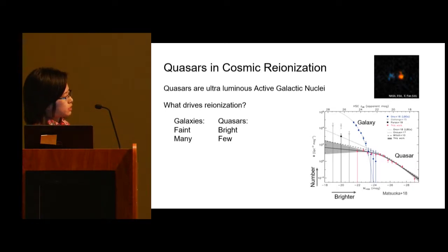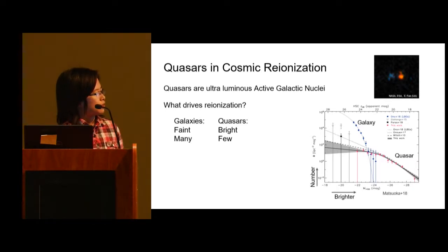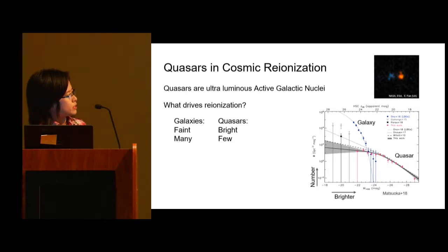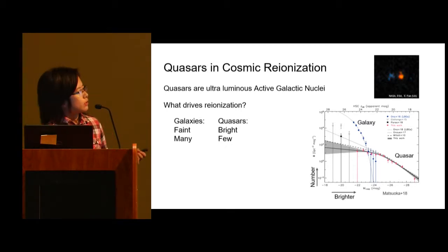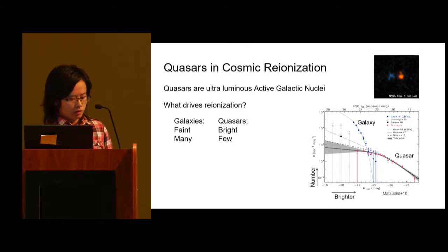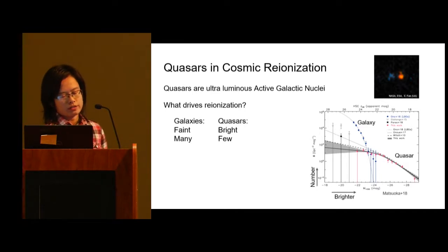The problem is that quasars are not as numerous as galaxies. On this figure, I show the luminosity function of both quasar and galaxy. On the right end, it's predominantly quasars, but in the faint end, the luminosity function of quasars flattens out compared to galaxies. In this faint end, we don't have enough data, so we have a lot of mysteries about these quasars.